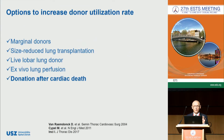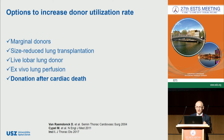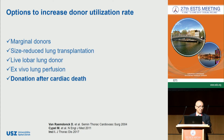In order to find a solution for organ shortage, the transplant community tried to find alternative sources. These include the use of marginal or extended criteria donors, size-reduced lung transplantation, live lobar transplantation, ex vivo lung perfusion to assess and recondition a questionable organ, and finally donation after cardiac death donors.